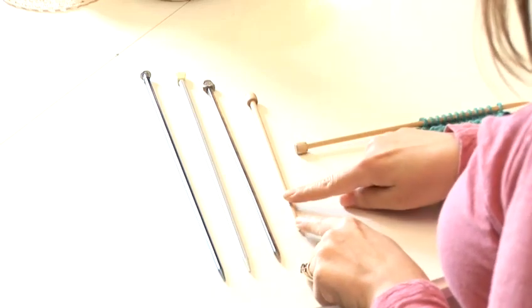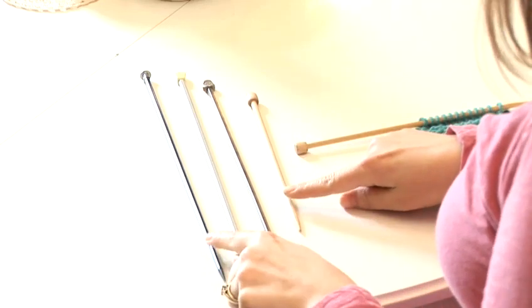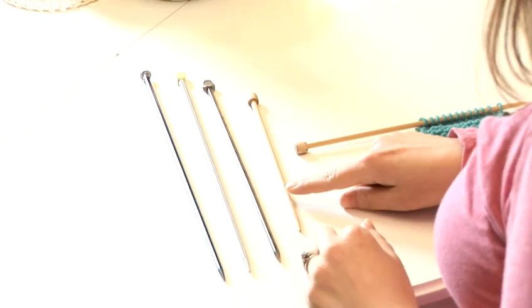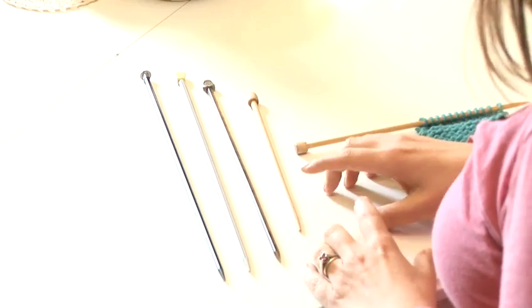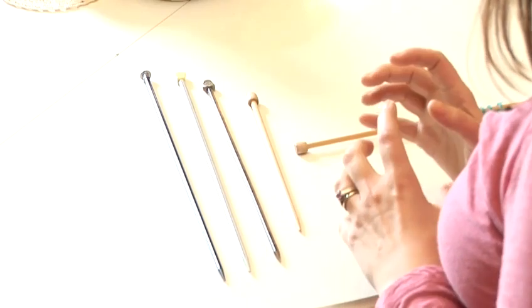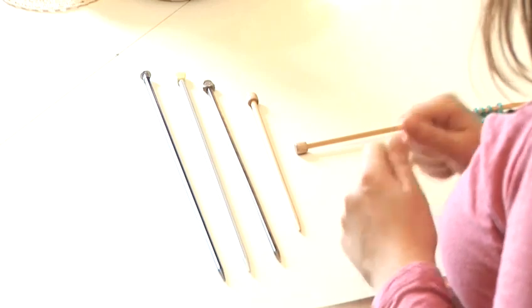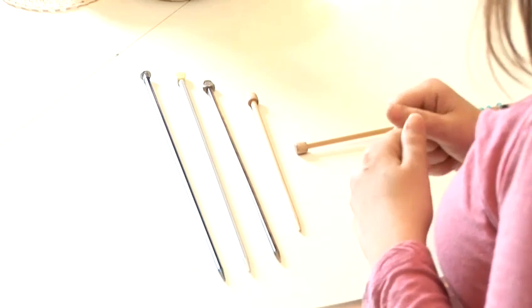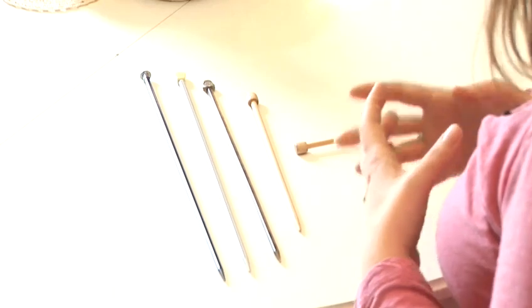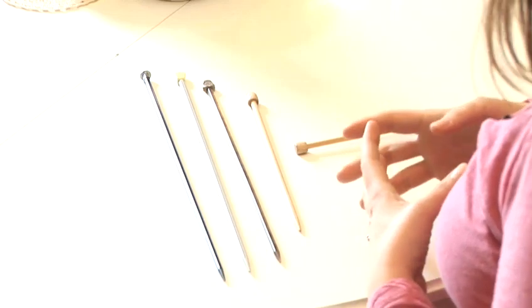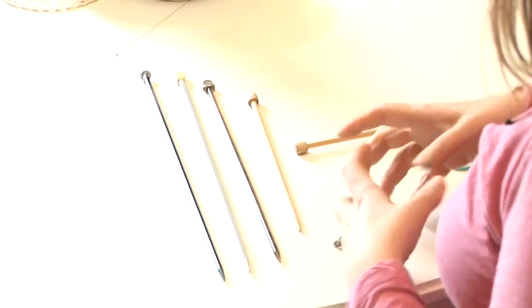And finally, bamboo needles. So bamboo, as compared to metal, which are probably the two most common needle types that people use, are lighter in weight. They are more flexible. They warm in the hand, and they're great for people who have any RSI or arthritis problems because they're slightly more flexible in the hands.